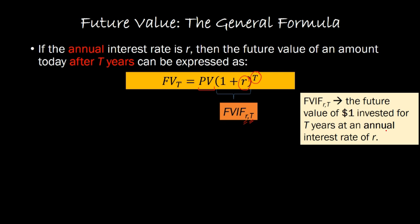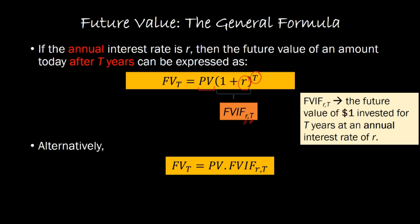Here's why this might be useful. If you are writing 1 plus r raised to the power t as the future value interest factor, then you are writing the future value formula as present value times FVIF_r,t, where this expression is just 1 plus r raised to the power t.